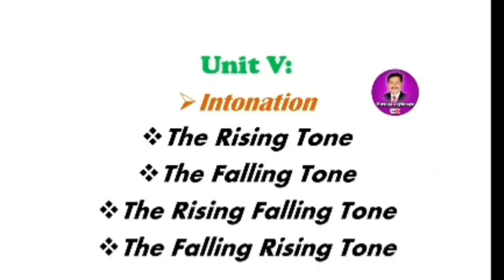Unit number five is the concluding unit, entitled 'Intonation.' In this unit we are going to discuss what is meant by intonation, the rising tone, the falling tone, and two sub-tones: the rising-falling tone and the falling-rising tone. These five units make up the complete paper.